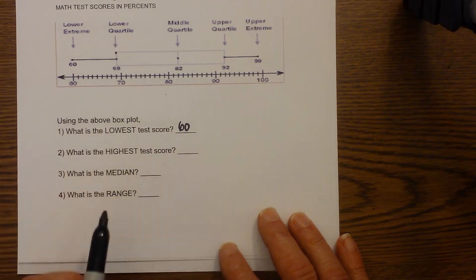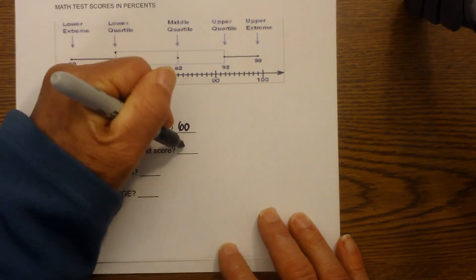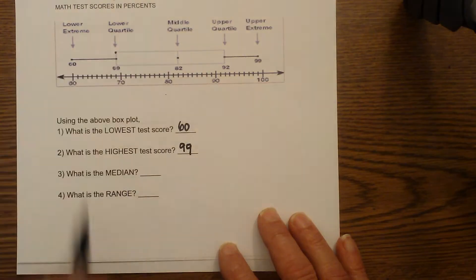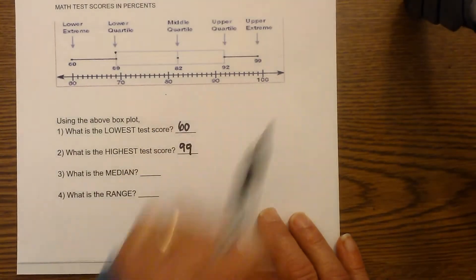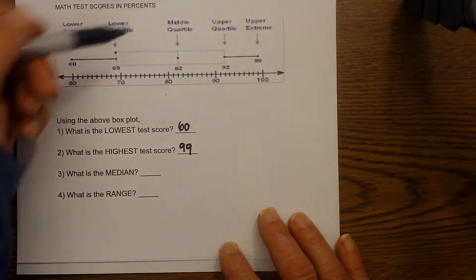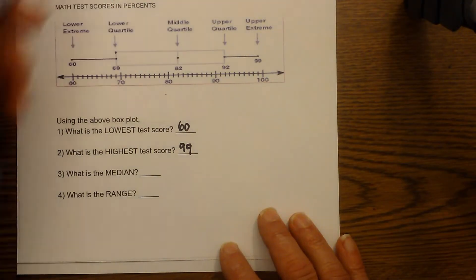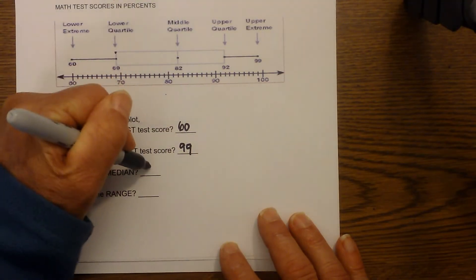Next you have the highest test score, and that would be 99. Again, that's the upper extreme. And what is the median? See it's very easy. It's the middle quartile. The median of this set of data would be 82.